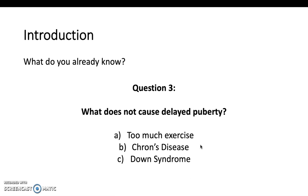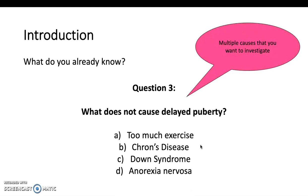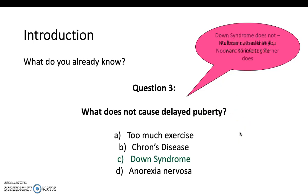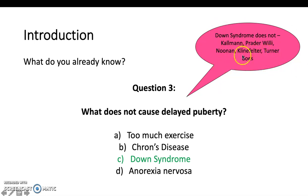Next question: what does not cause delayed puberty? There are many causes to investigate, but one can cause confusion. Down syndrome does not cause delayed puberty, but many other syndromes do. These include Turner and Klinefelter, which are chromosomal disorders you'd karyotype, as well as Kallmann, Prader-Willi, and Noonan syndromes.